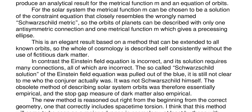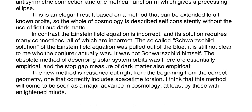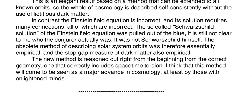In contrast, the Einstein field equation is incorrect and its solution requires many connections, all of which are incorrect. The so-called Schwarzschild solution of the Einstein field equation was pulled out of the blue, and it is still not clear who the finder actually was — it was certainly not Schwarzschild himself. The obsolete method of describing solar system orbits was therefore essentially empirical, and the stopgap measure of dark matter also empirical. The new method is reasoned out right from the beginning from the correct geometry, one that correctly includes spacetime torsion.